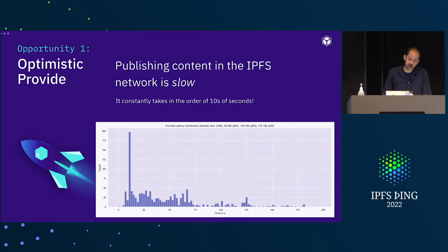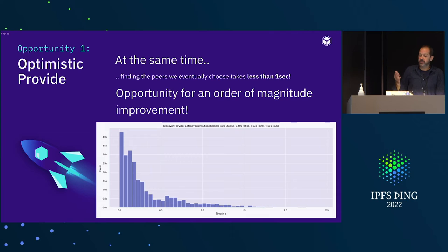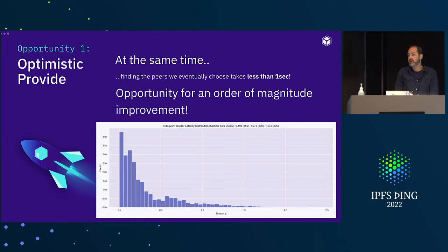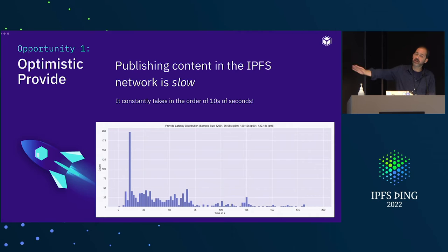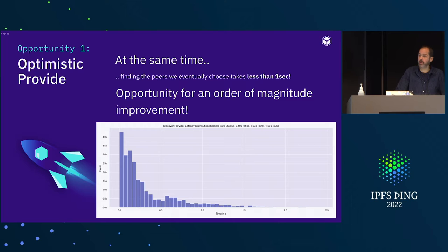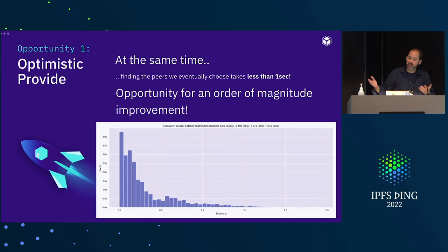What we found out is that finding the peers we're going to contact in order to make the content public is done in less than a second — most of the peers are found within a very short time period. This tells us that instead of waiting tens and hundreds of seconds, we can become smarter and reduce the provide time by an order of magnitude. We're working on solutions to have much shorter publish times.